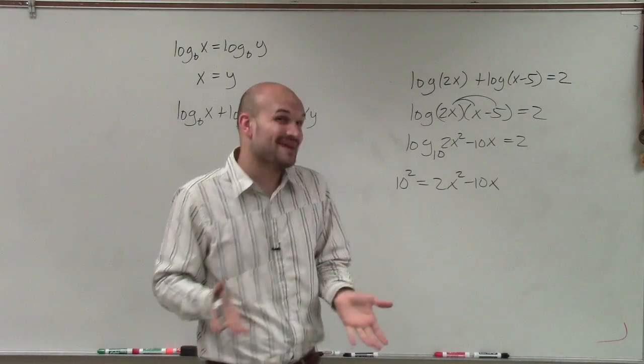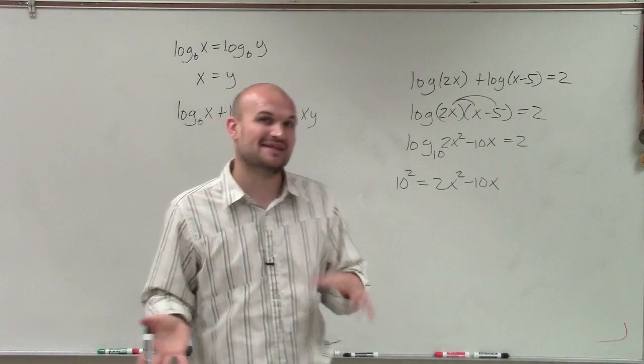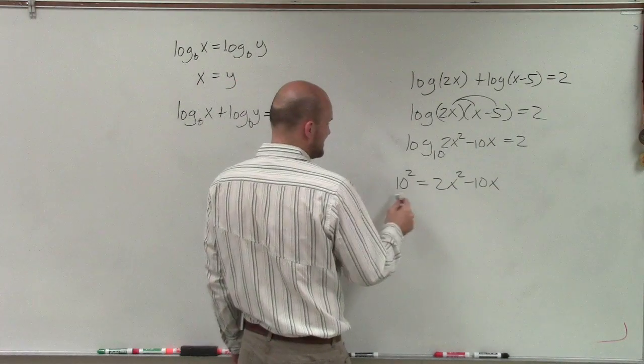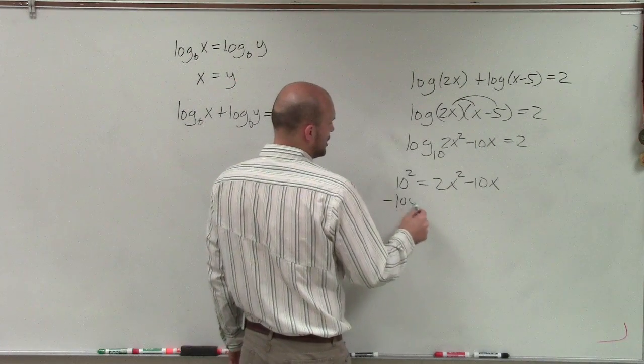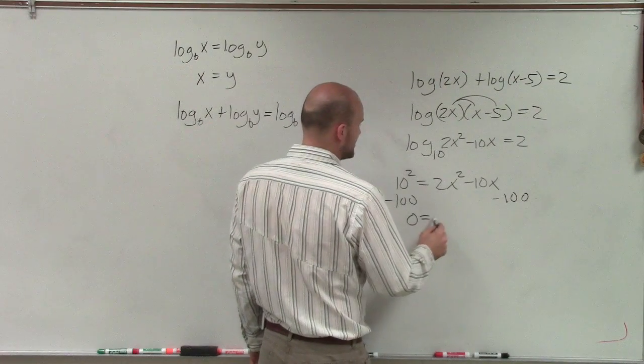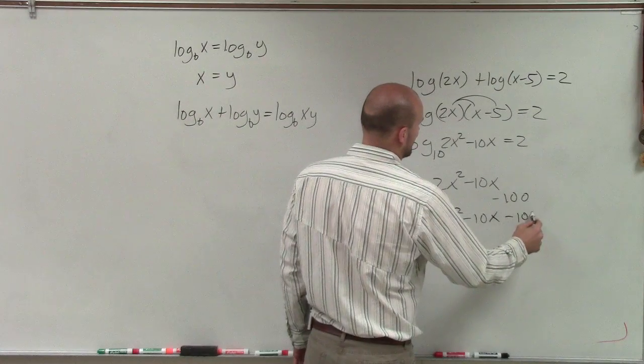So now, I have a lot of x's that I need to solve for. And to do that, remember, we can go back to our factoring methods. So what I'll do is I'll subtract 100, because 10 squared is 100 on both sides. And to solve by factoring, I have 0 equals 2x squared minus 10x minus 100.